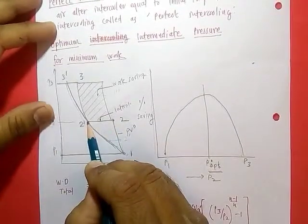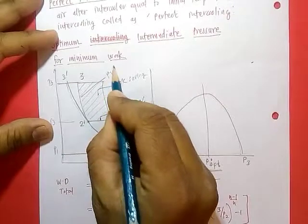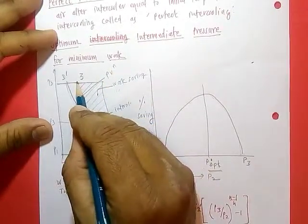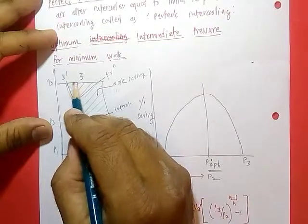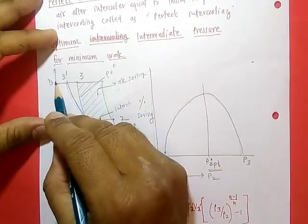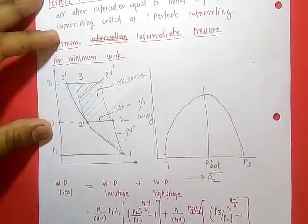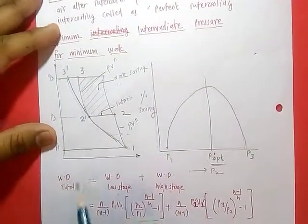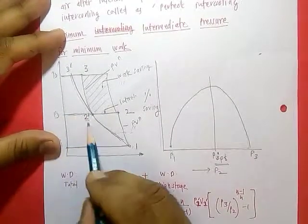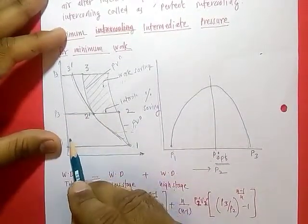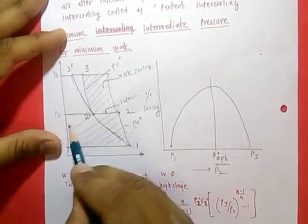After state 2-dash, air is again compressed according to process p2-dash to n, then the outlet will be at state 3. As there is no clearance volume, all compressed air is delivered to the delivery tank or storage tank. Total work done is equal to work done in the low stage compressor plus work done in the second stage.